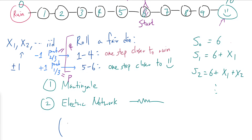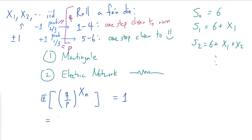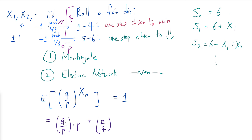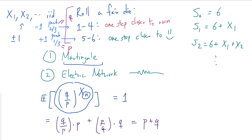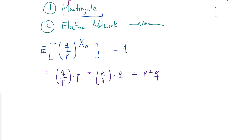A key insight is that when we consider (q/p)^xₙ and take its expectation, we get exactly 1. This is because xₙ equals 1 with probability p, giving (q/p)^1 · p = q, and xₙ equals −1 with probability q, giving (q/p)^{−1} · q = (p/q) · q = p. So the total is p + q = 1. Since the expectation is 1 and the xᵢ are independent, multiplying these terms accumulatively gives a sequence whose conditional expectation of each term given the previous term equals the previous term.